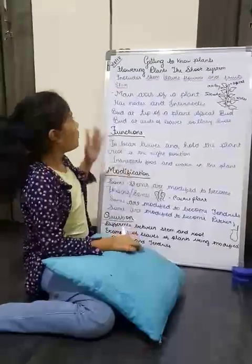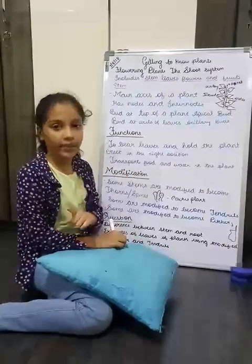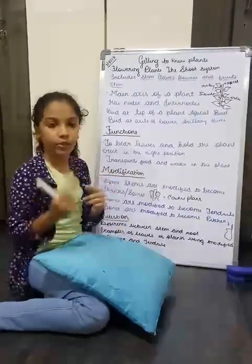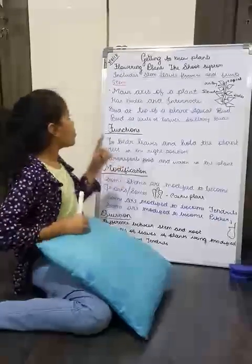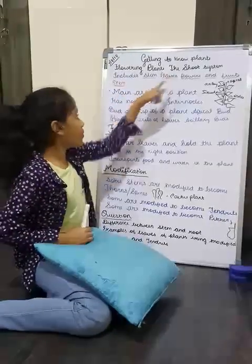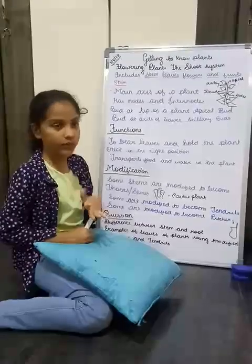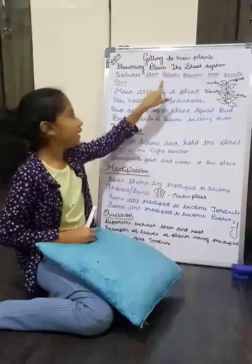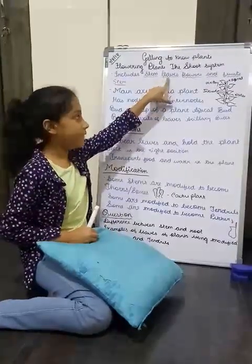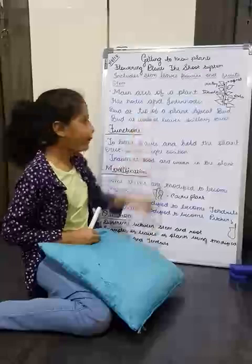We learned that the flowering plant is divided into two parts: root and shoot. The shoot system includes many parts like stems, leaves, flowers, and fruits.